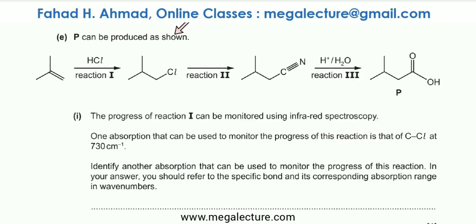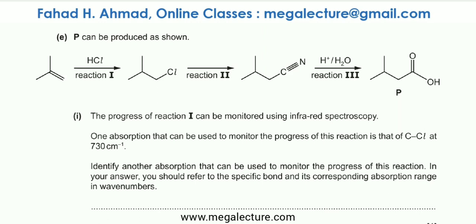Part E: P can be produced by an alkene reacting with HCl (double bond opens, H bonds to one side, Cl to the other), then the Cl is substituted by CN⁻ (nucleophilic substitution), and the CN is hydrolyzed to a carboxylic acid. The progress of reaction 1 can be monitored using IR spectroscopy — one absorption used is the C–Cl bond at 730 cm⁻¹, which appears as the product forms.